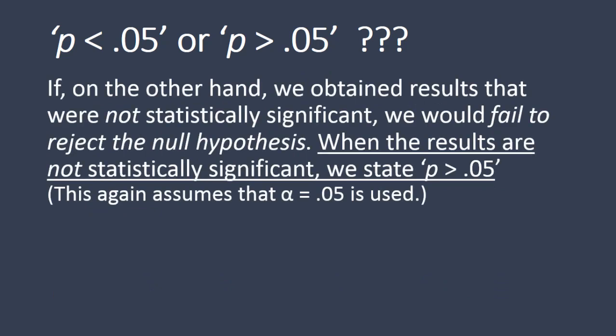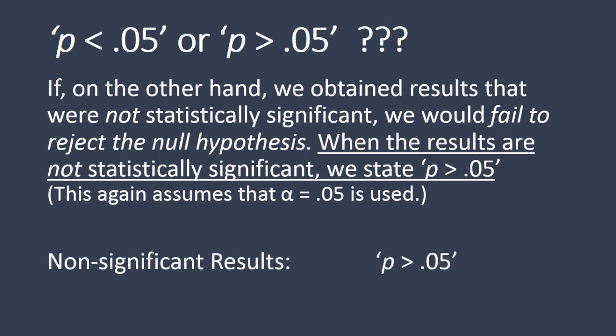If, on the other hand, we obtained results that were not statistically significant, we would fail to reject the null hypothesis. When the results are not statistically significant, we state P is greater than 0.05. So in summary, for non-significant results, we state P is greater than 0.05.